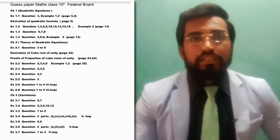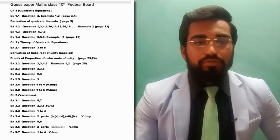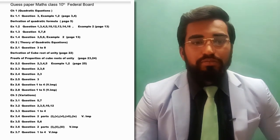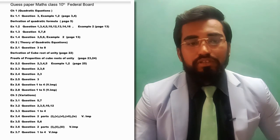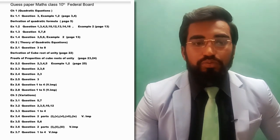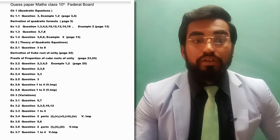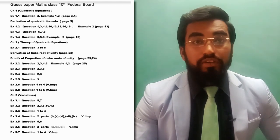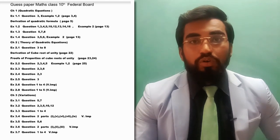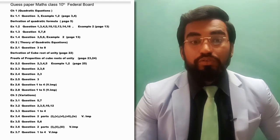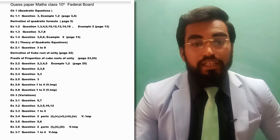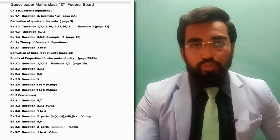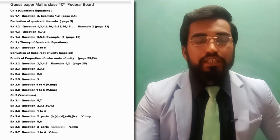Next, move to chapter number two, whose name is the Theory of Quadratic Equations. Exercise 2.1 important questions are question number three to eight. Next, the derivation of cube root of unity on page number 22 — this derivation is very very important. Next, proofs of properties of complex cube roots of unity on page number 23 and 24 are also very important.